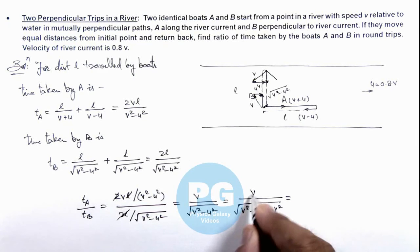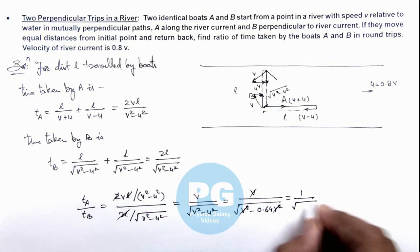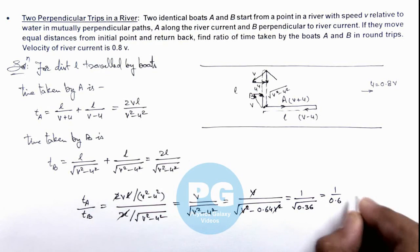So on simplifying, we can see here v also gets cancelled out and this is 1 by root of 0.36, so that will be 1 by 0.6 and we are getting this as 5 by 3.